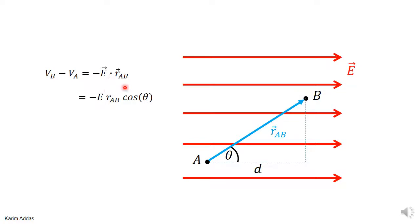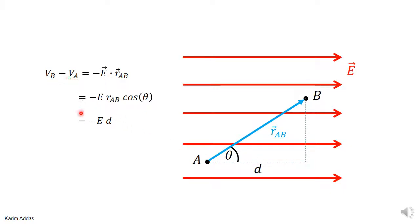The dot product between any two vectors is the magnitude of the first times the magnitude of the second times the cosine of the angle between them. The angle between the electric field and the vector RAB is theta. RAB times cosine theta is just the distance d. So we get the result that the potential difference is minus E times d, which is exactly the result we got before.